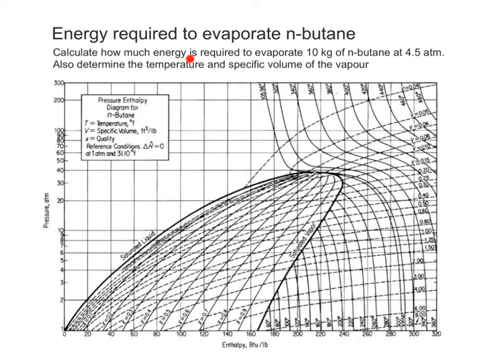The first thing to realize is that this energy required to evaporate this 10 kilograms of n-butane is effectively the heat of evaporation multiplied by the amount of substance that we are evaporating. It's strongly implied by the way this problem is worded that we will be starting with a saturated liquid and evaporate all of that to a saturated vapor, all at this pressure of 4.5 atmospheres.